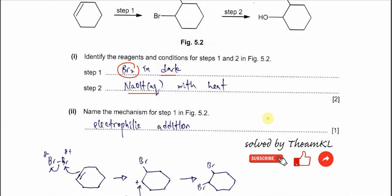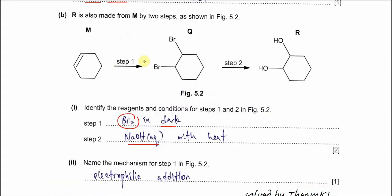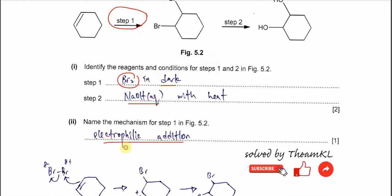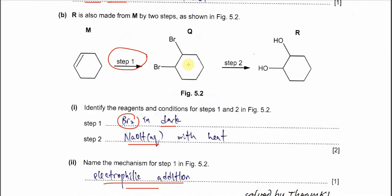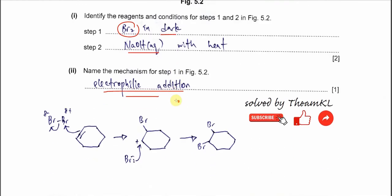Okay part 2. Name the mechanism for the step 1 here this one. So this one we call electrophilic addition for step 1 from this double bond to form this halogenoalkane. So this is the mechanism.